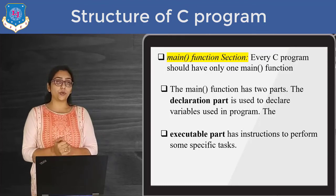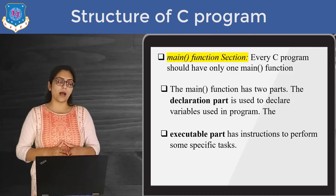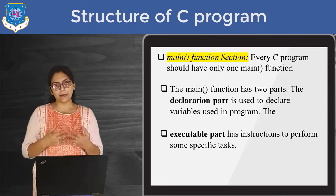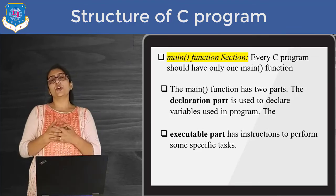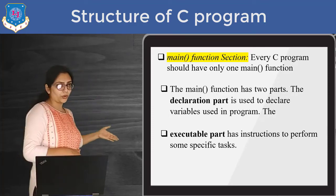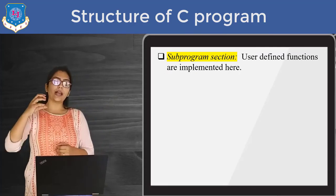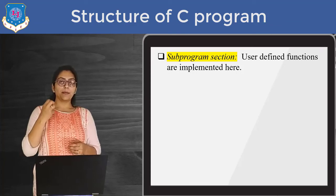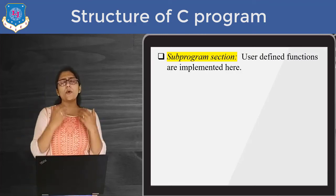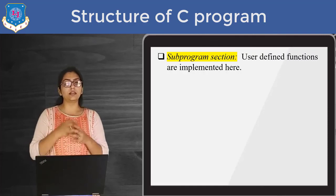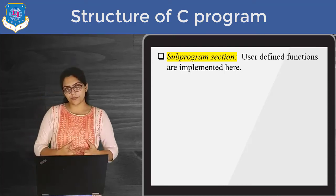Then the main function - you cannot use a second main function in your program because program execution starts with main. If you use more than one main function, your computer can be confused about where to start executing. Main function consists of two parts: declaration part and execution part. Then the sub-program section - in the sub-program section you can make your own functions like main. You can make functions called add, sub, power, and many more. We are going to make our own functions in the chapter on functions. This is all about the structure of C programming language.